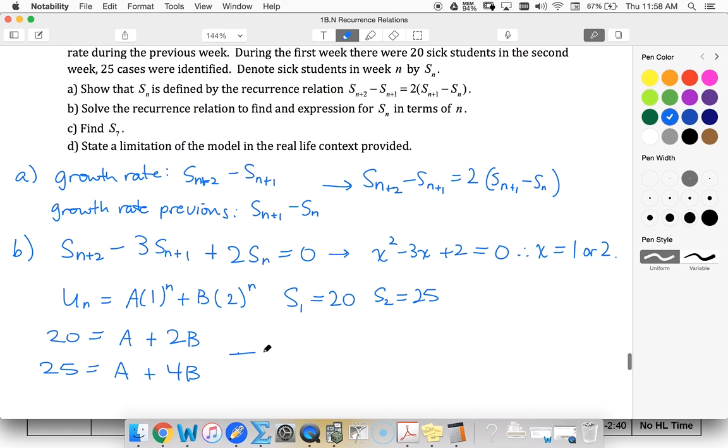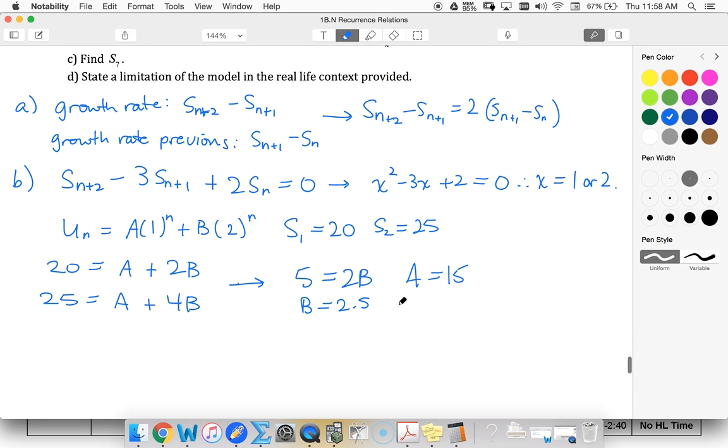Solving this, I won't leave you to solve it because I don't know what it is off the top of my head. So five is two B, that means B must be 2.5. That then means that A is equal to 15. So that then means my U sub N is 15 plus 2.5 times two to the N.